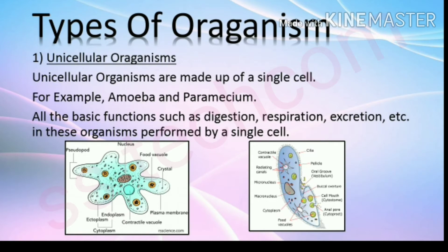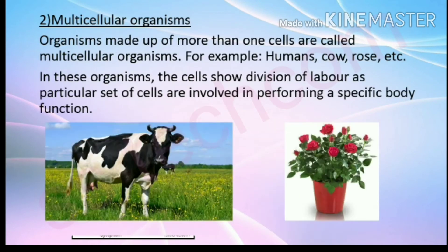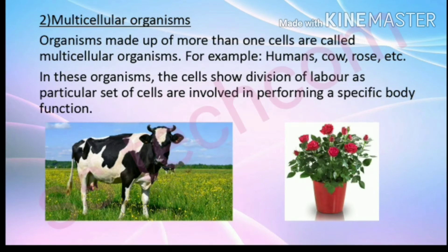The second type of organism is the multicellular organism. Organisms made up of more than one cell are called multicellular organisms, for example humans, cows, and roses. In these organisms, cells show division of labor, as a particular set of cells are involved in performing a specific body function.